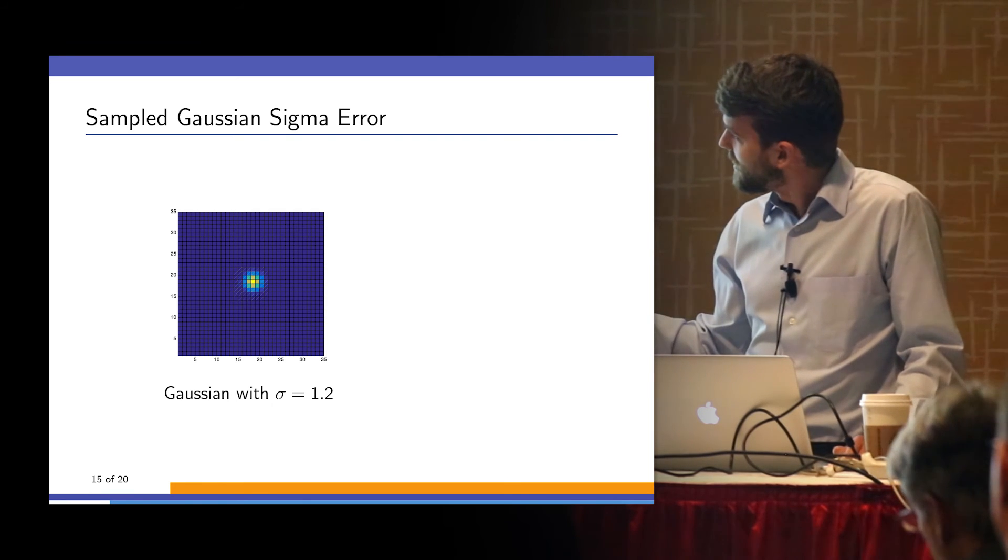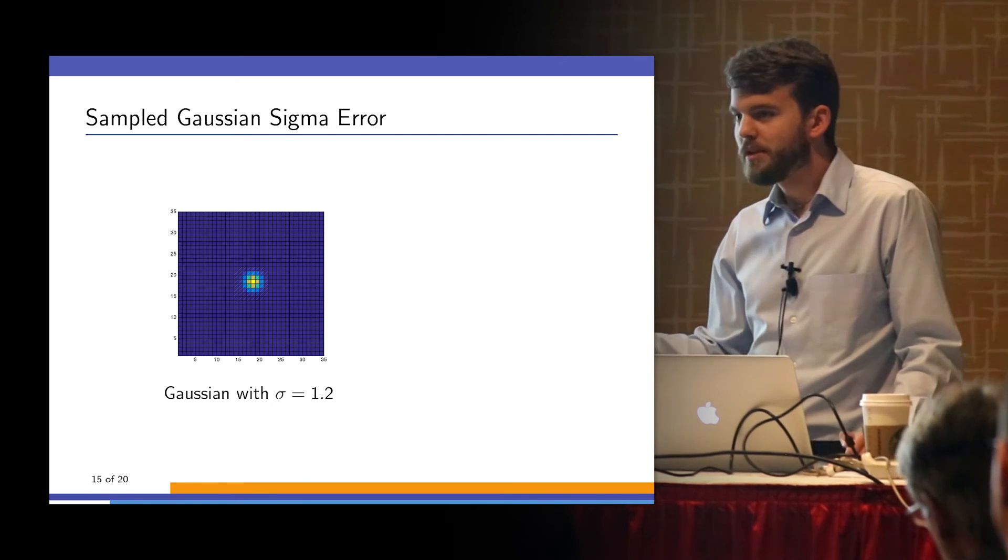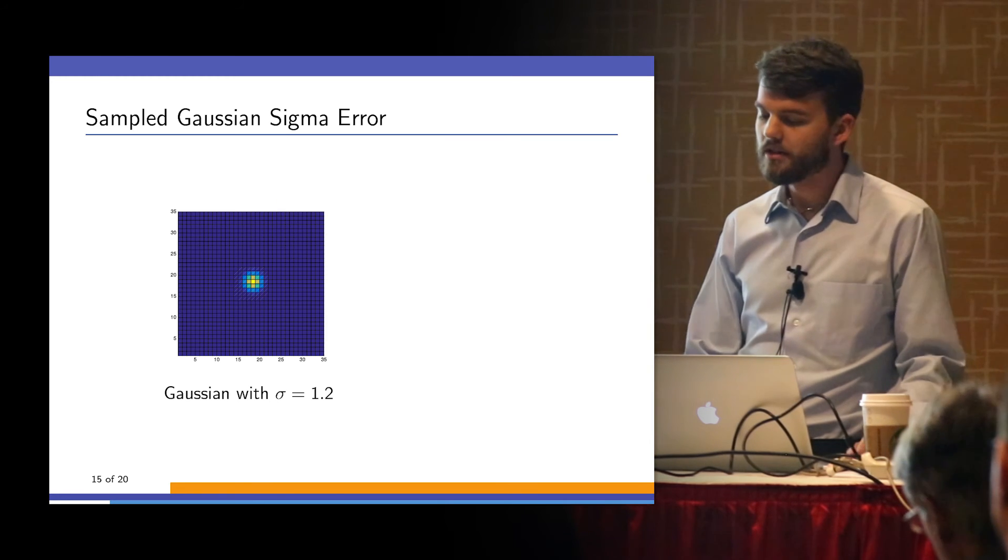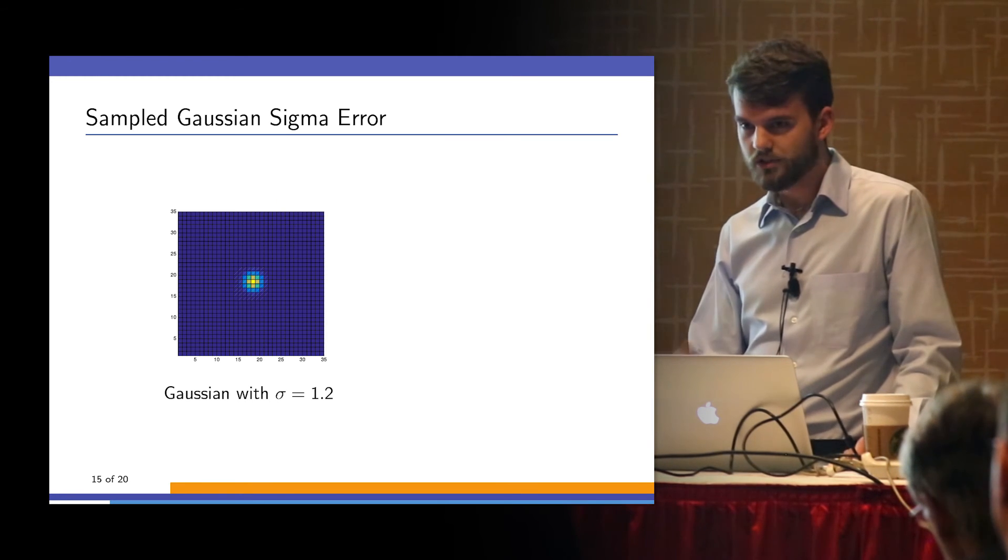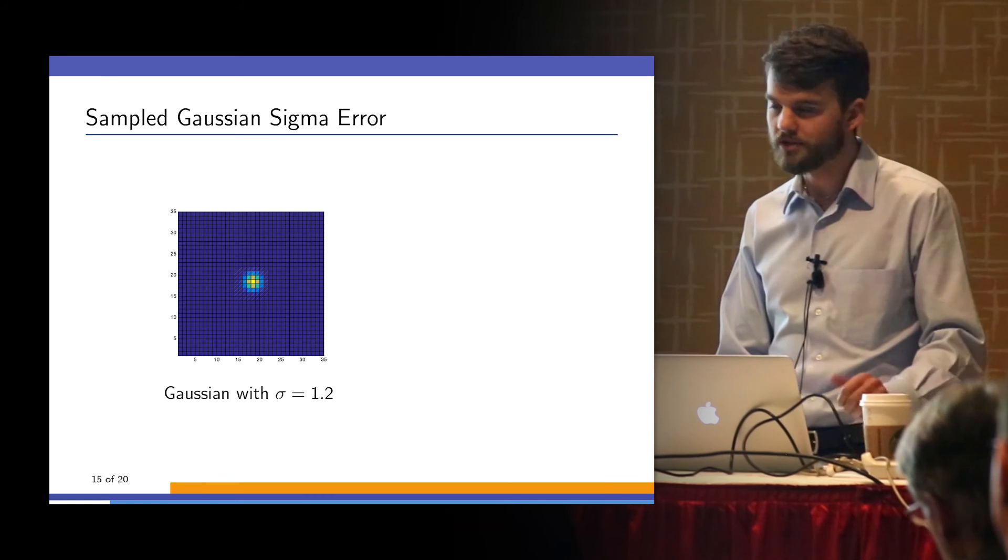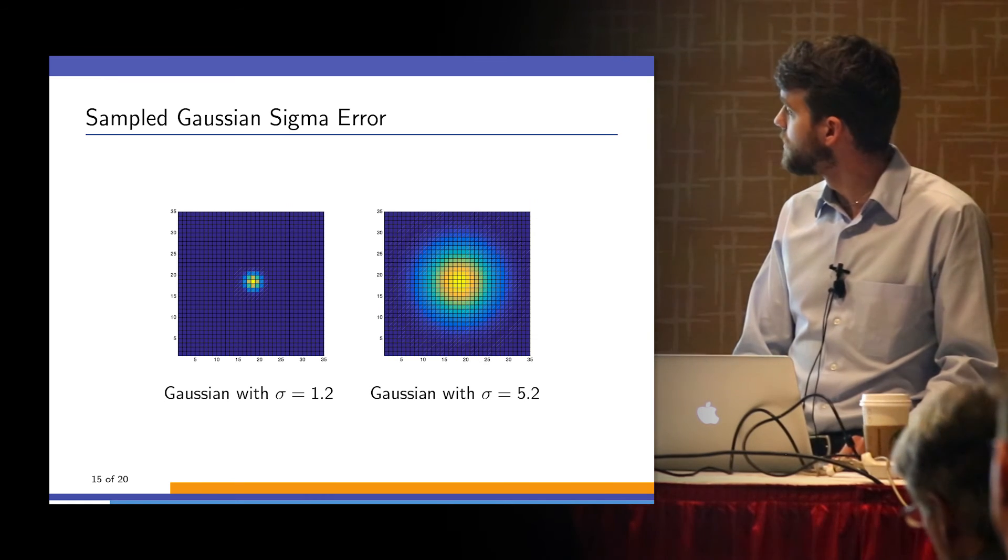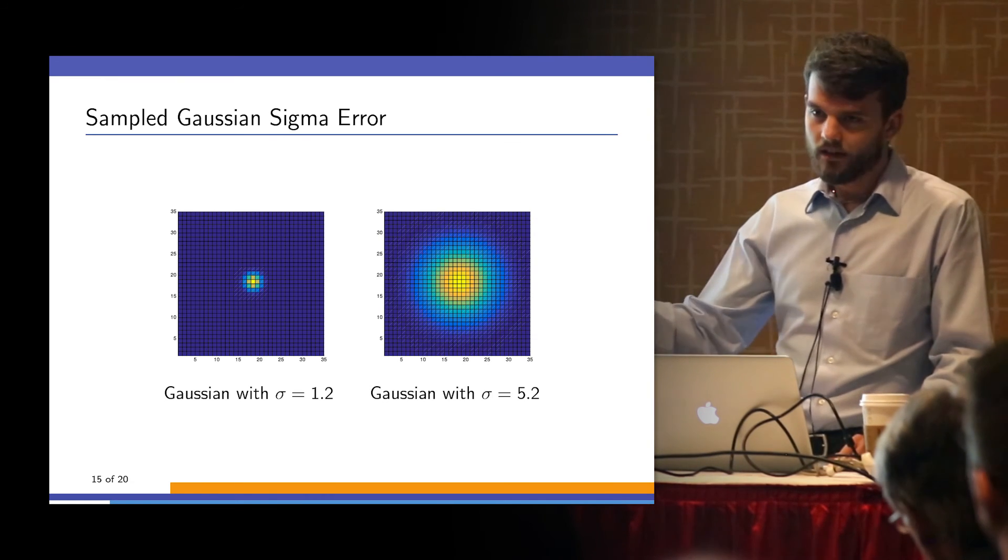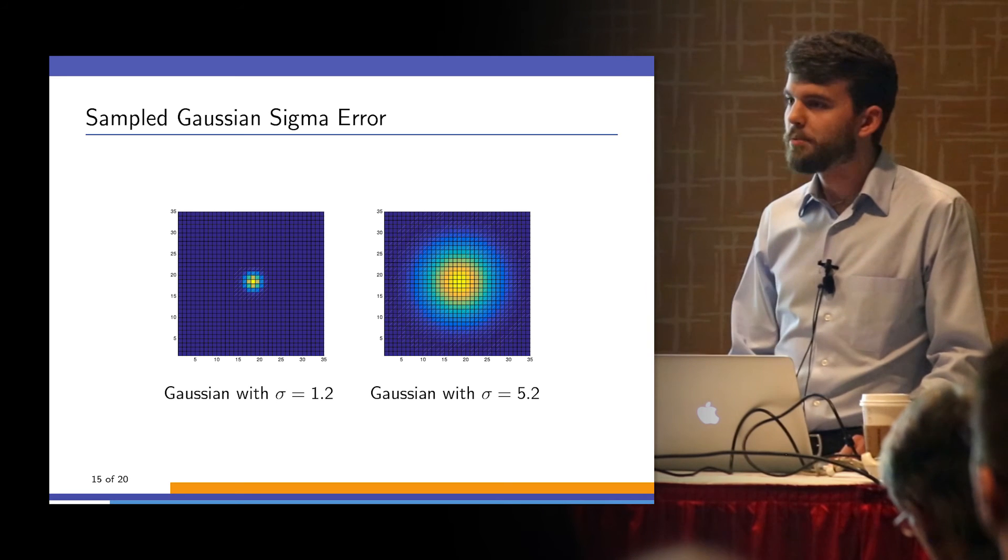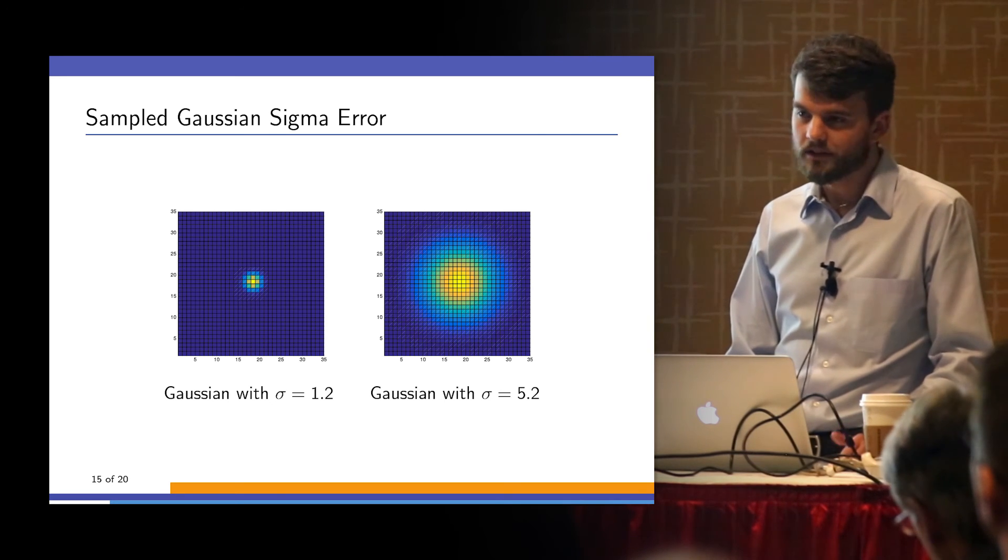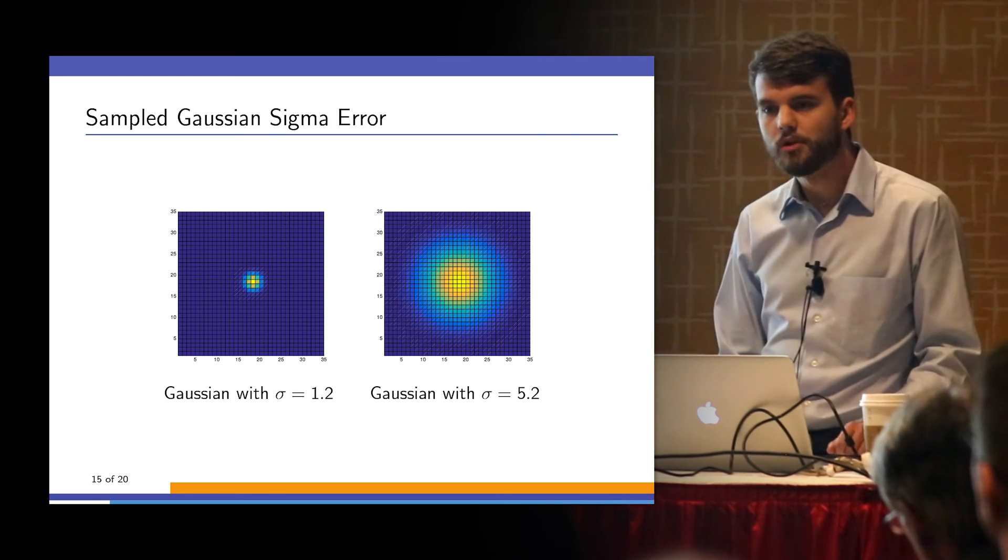On the diagonals where you should be getting one value, you're getting a different value. That generates this directional dependency problem, which is the source of that error. When you do a much larger Gaussian, the sampling becomes less and less significant as a factor. So that's where that is.